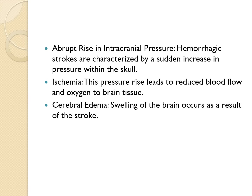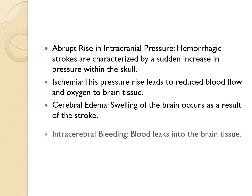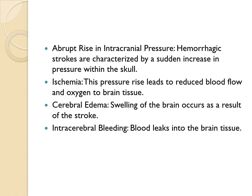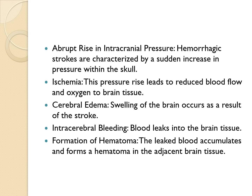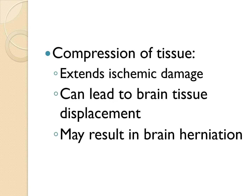The pathology associated with hemorrhagic stroke is primarily related to an abrupt rise in intracranial pressure and ischemia, followed by cerebral edema. With intracerebral bleeding, blood is forced into the adjacent brain tissue where a hematoma forms. The compression of tissue then extends the ischemic damage and can result in brain tissue displacement or herniation.